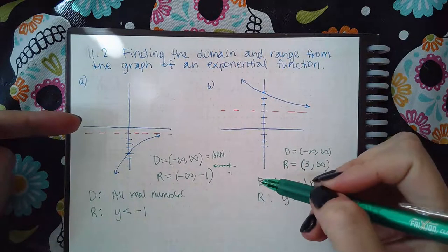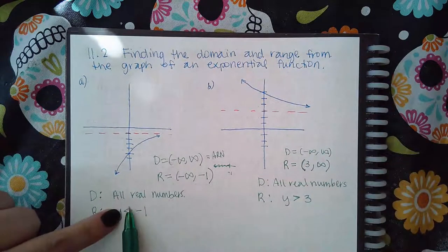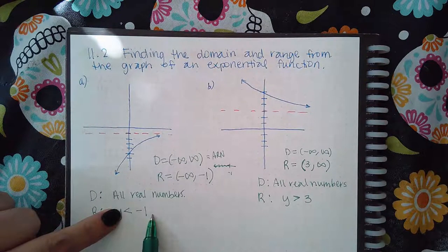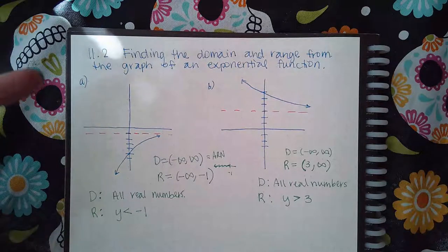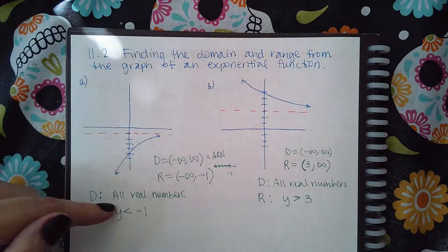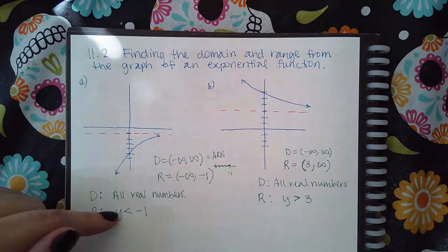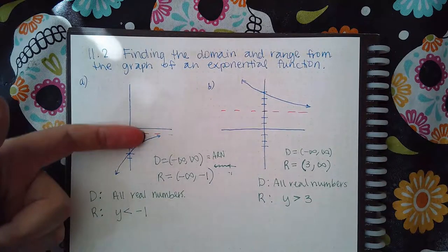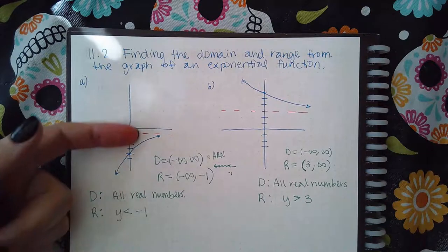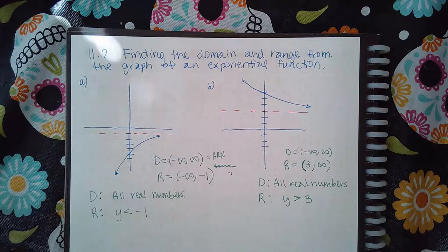So how do I write that as an inequality? Well, that would be everything to the left of negative one, which means everything that is less than negative one. And which variable should I be using? You use x for domain and you use y for range. So that means my y values should be less than negative one. And sure enough, all the graph is below—y values are less than negative one.